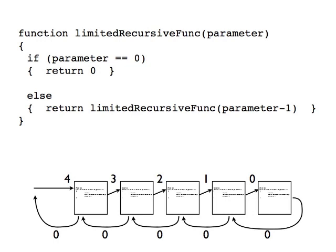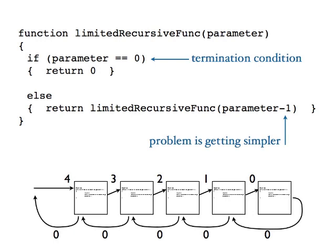So we have some parameter or parameters that get passed. We have a termination condition that says when the parameter reaches a particular value, the problem is simple enough that we can solve it easily. And if it's not, then instead of returning directly, we make another recursive call to our recursive function by passing it a parameter that is a reduced version or a simpler version of the problem.